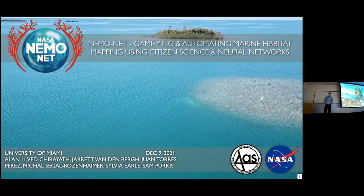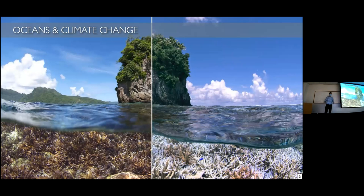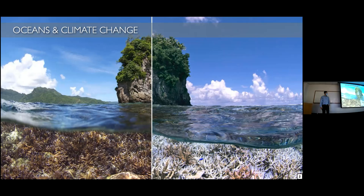Everyone here probably knows why we need to protect the reefs. Coral bleaching is a big problem, and because of climate change and human factors, these habitats are not thriving at this time. What we're doing at NemoNet is trying to come up with a way to track, monitor, and assess these systems using automated methods, given data from drones, satellites, and so forth.